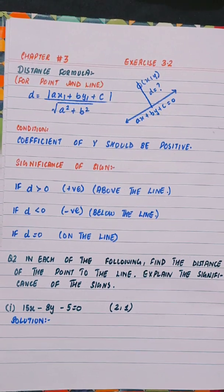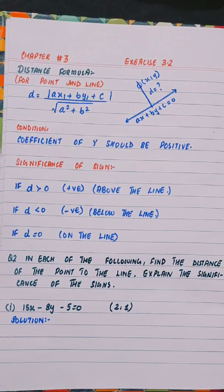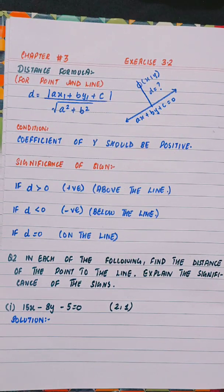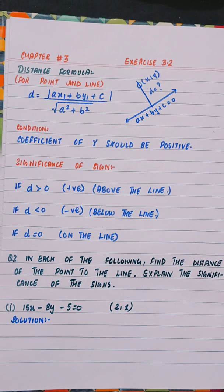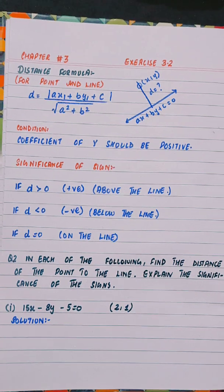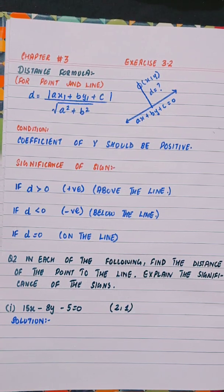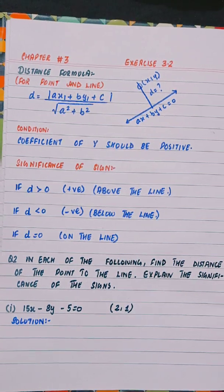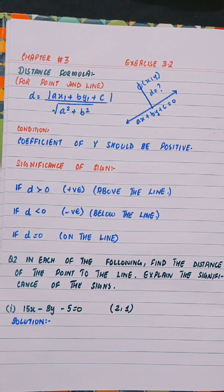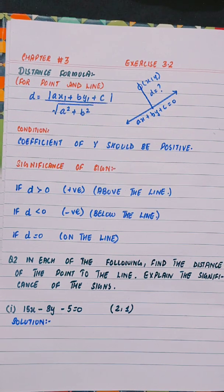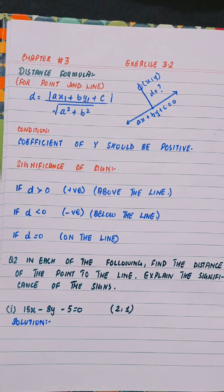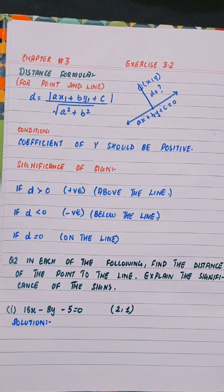Question 2: In each of the following, find the distance of the point to the line and explain the significance of the sign. Part 1: the line is 15x minus 8y minus 5 equals 0, and the point is (2, 1).